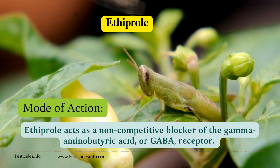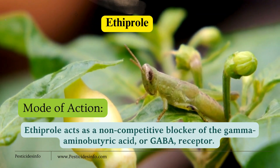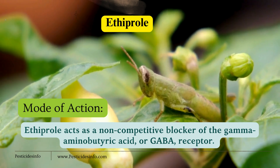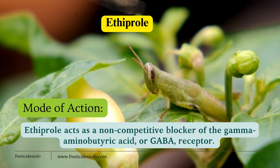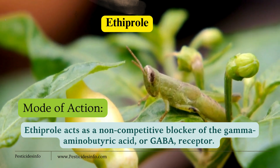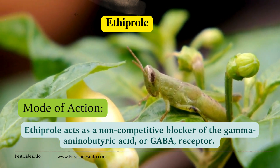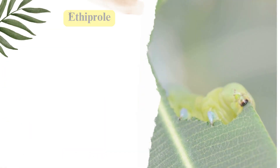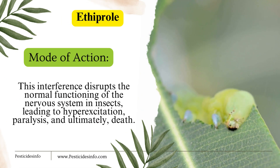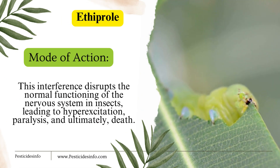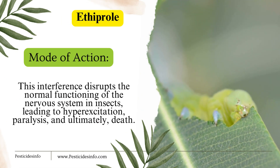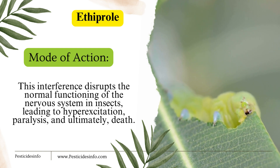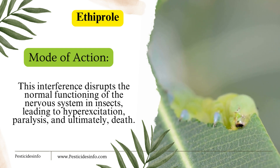Mode of action. Ethiprol acts as a non-competitive blocker of the gamma-aminobutyric acid, or GABA, receptor. This interference disrupts the normal functioning of the nervous system in insects, leading to hyperexcitation, paralysis, and ultimately, death.